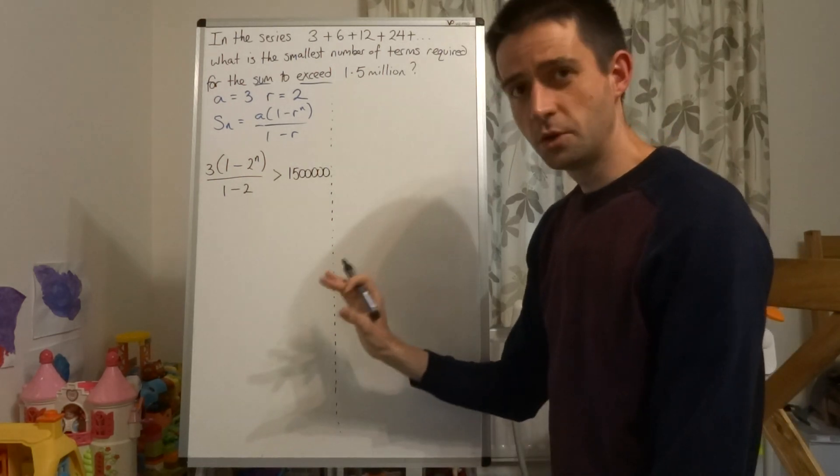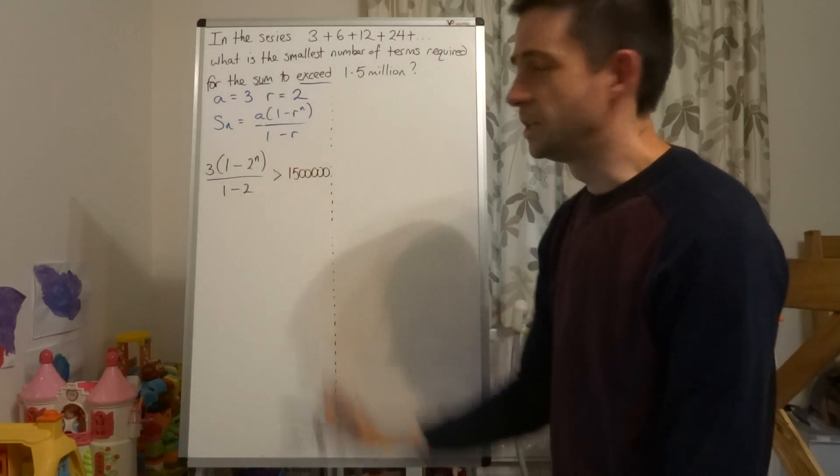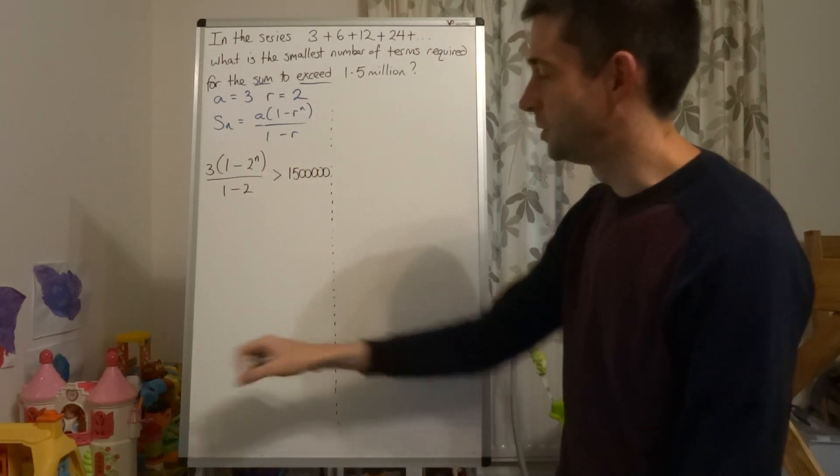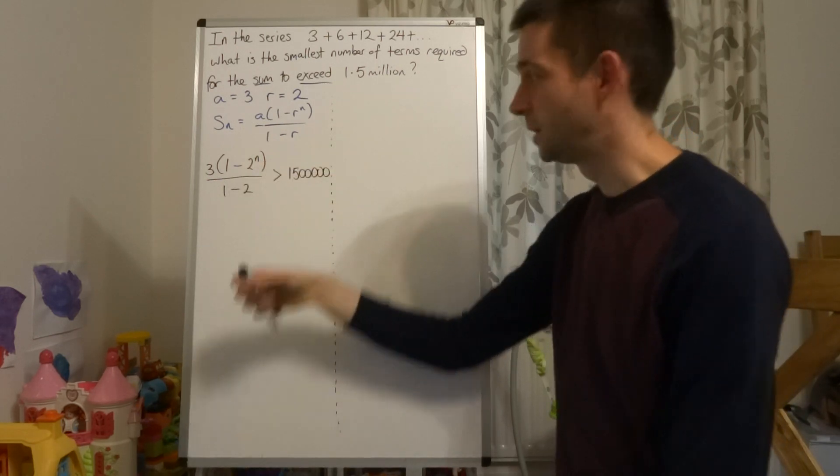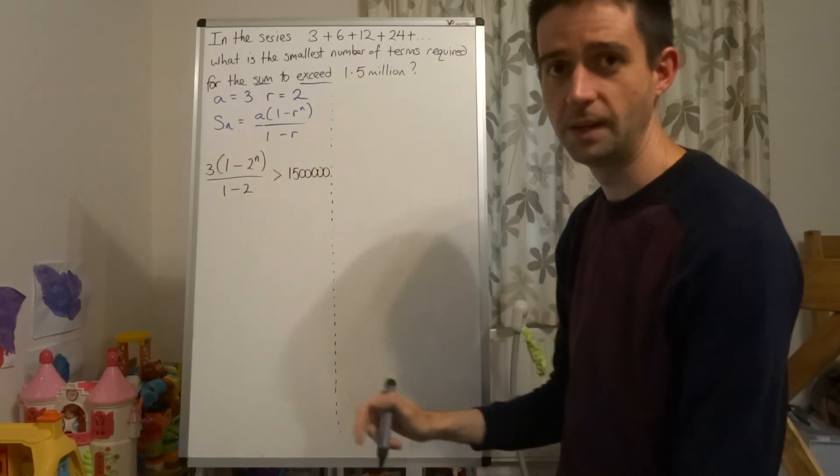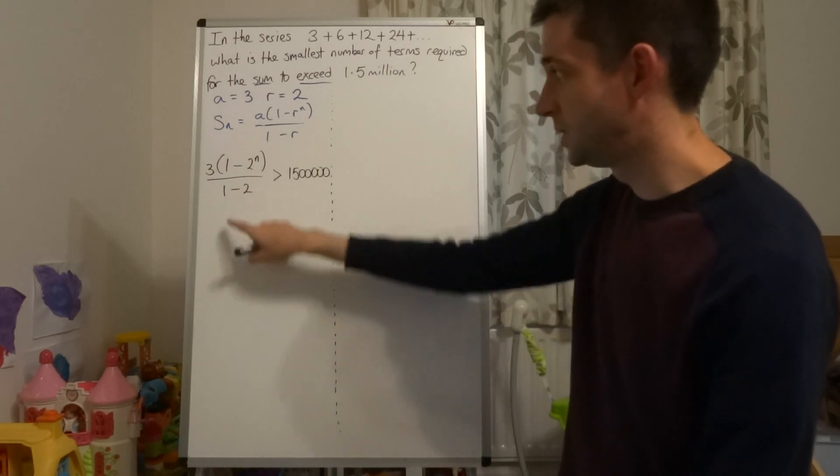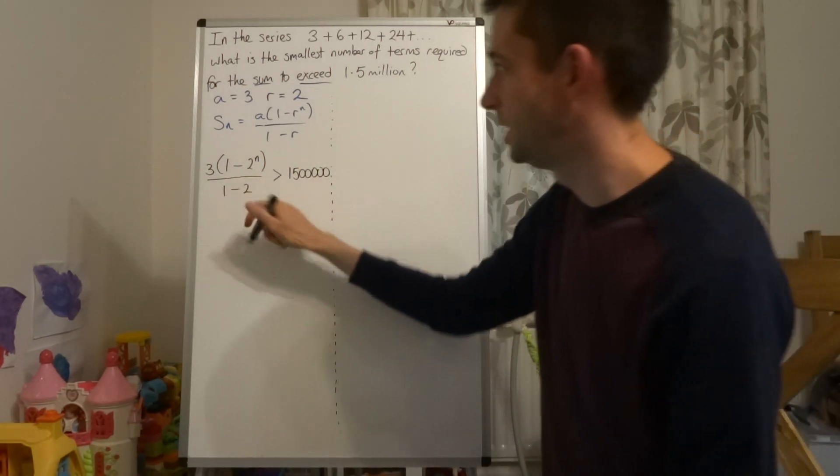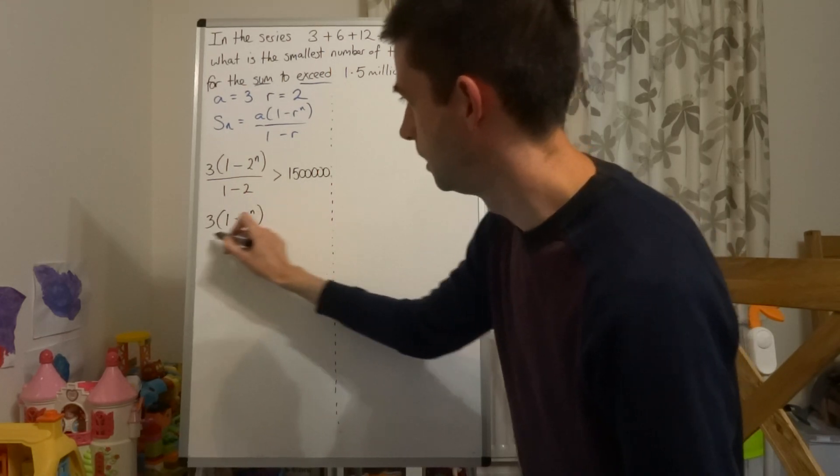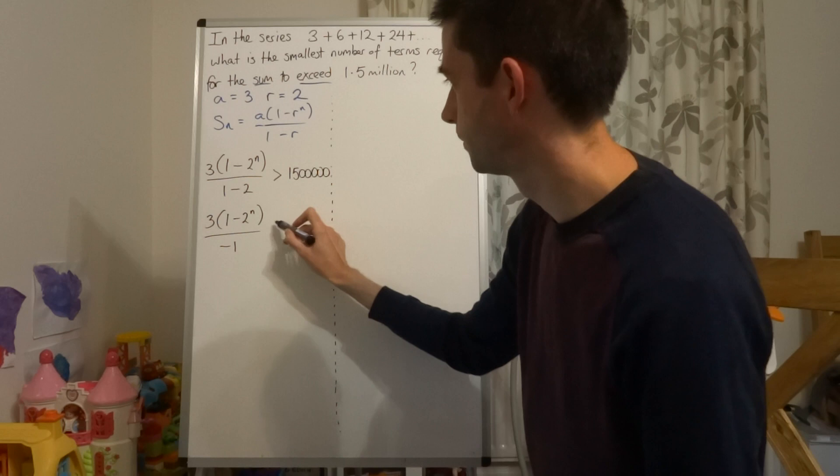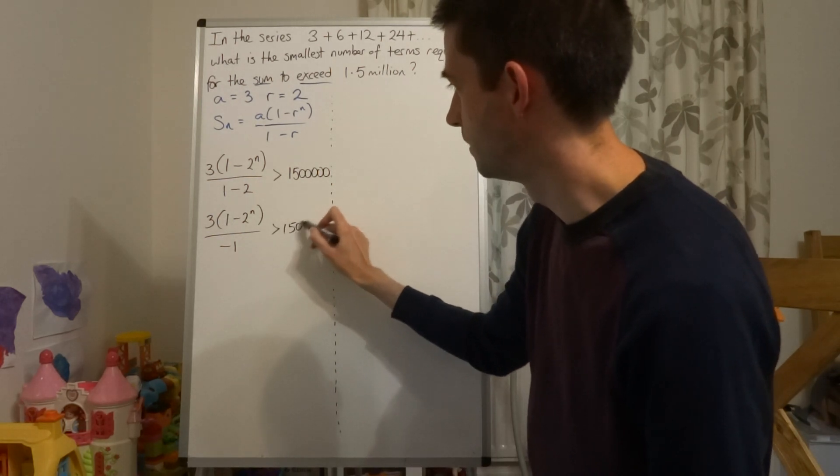Now, what you must not do is multiply this bracket out, because what people tend to do is they'll say, oh, it's 3 minus 6 to the power of n, and it's not. You cannot times that 2 by that 3. So what we do instead is we say that 3 lots of 1 minus 2 to the power of n over negative 1 is greater than 1.5 million.